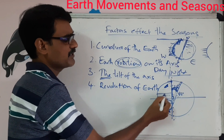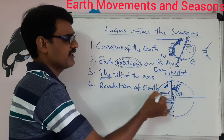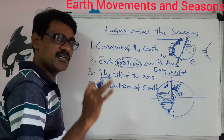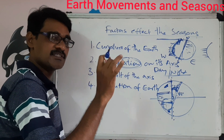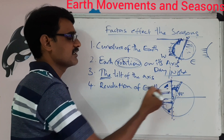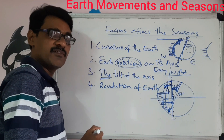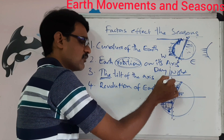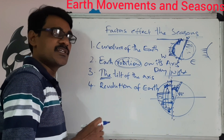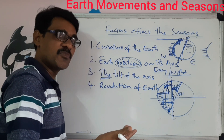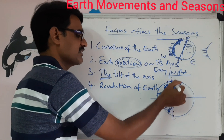Without axial tilt, the equatorial region would receive more light and remain very hot throughout the year, while polar regions would remain very cold. These very cold conditions are not suitable for living things on the earth's surface, so there would be no biosphere. This is the advantage of the tilt of the earth's axis.